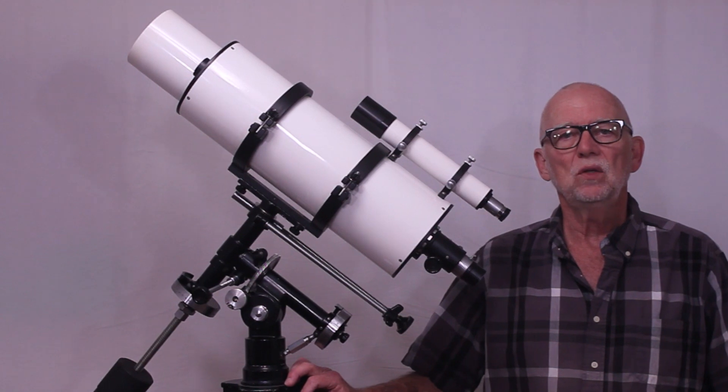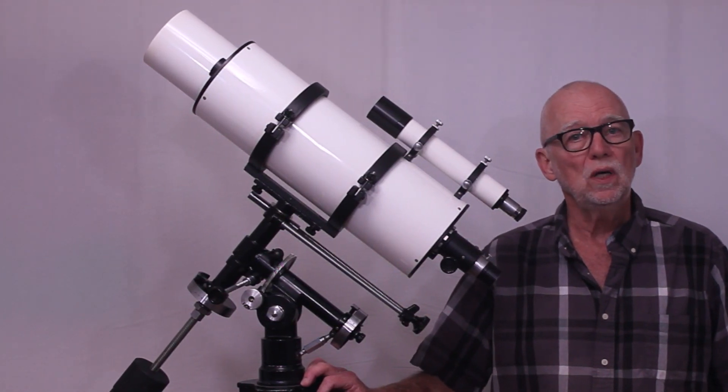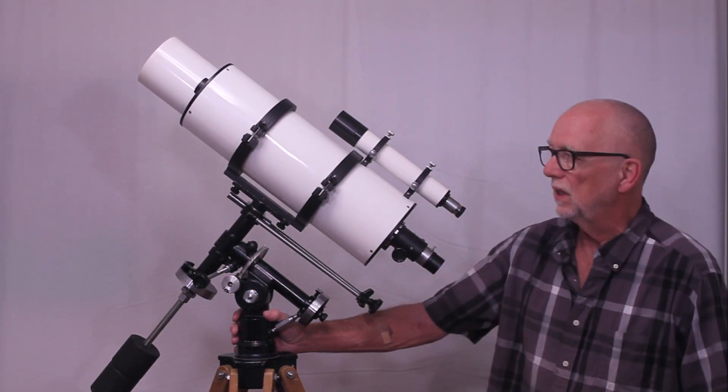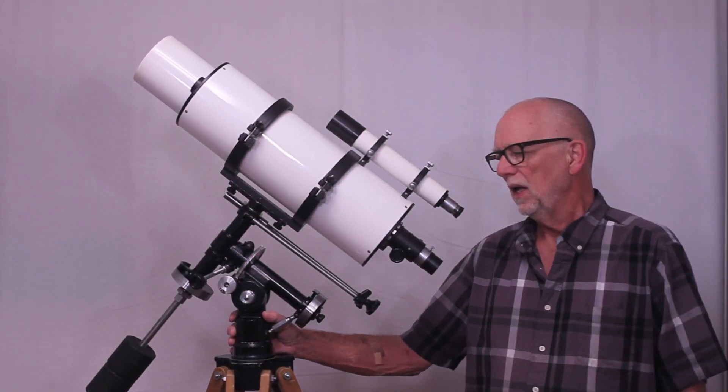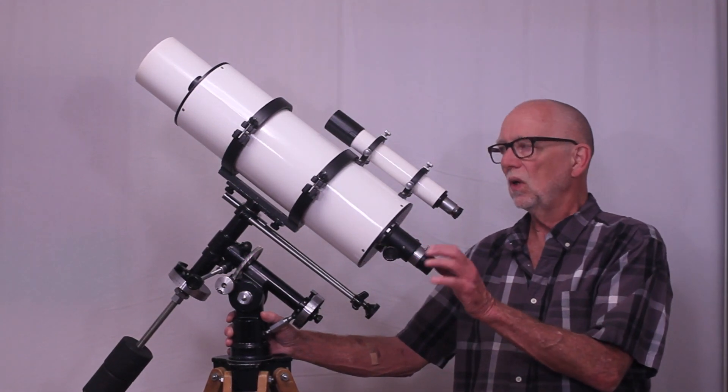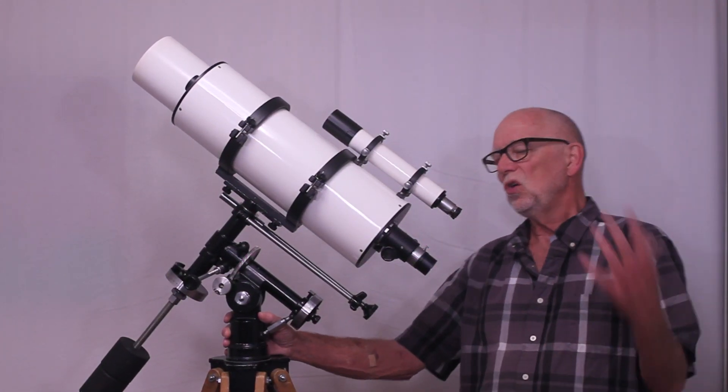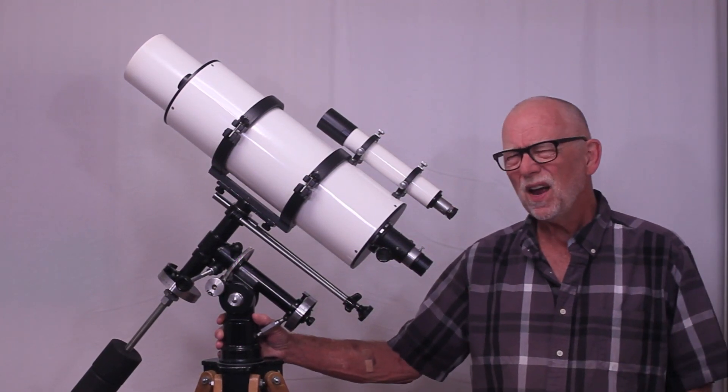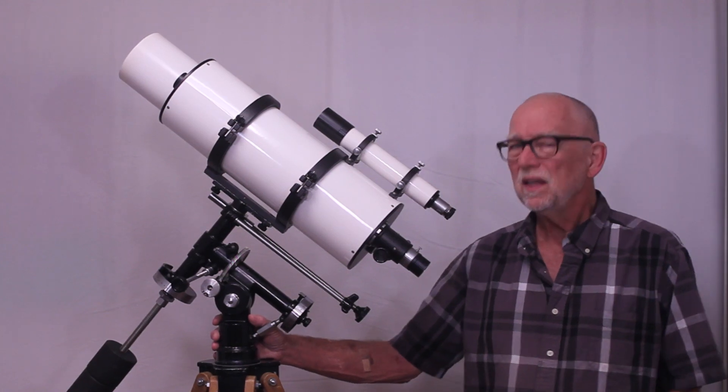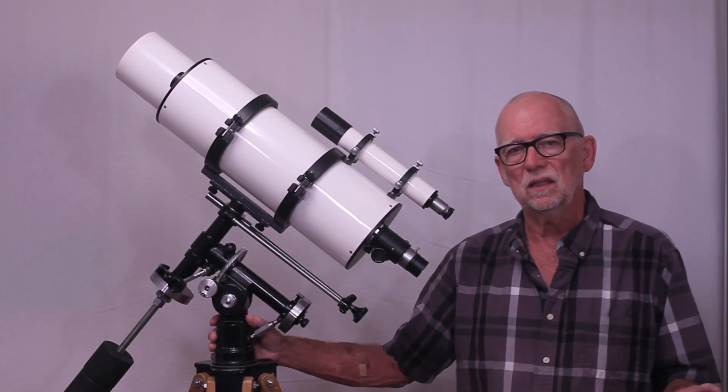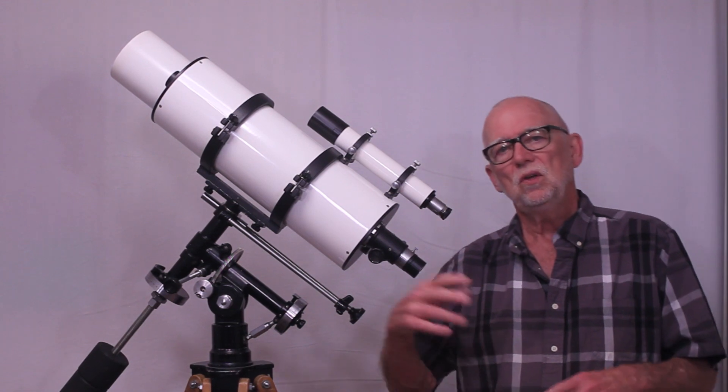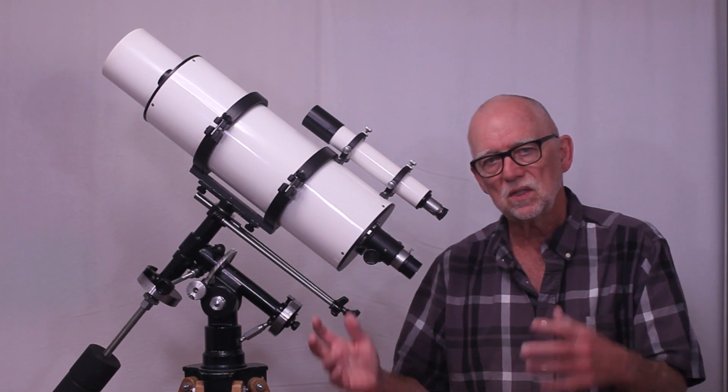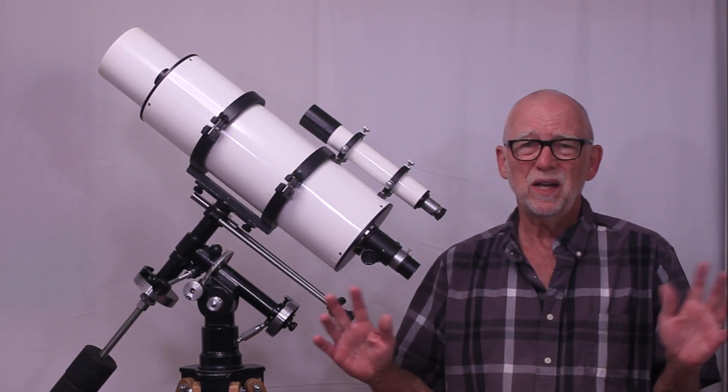In the United States this would be a Unitron 132C. This particular telescope was sold in Italy so the designation is slightly different. As a matter of fact I'll show you a close-up of the focuser. It says Unitron Polarex. Both names are on this telescope. Very, very rare, very unusual. I think that may have only happened in Italy. And there's some complication with Unitron and the naming rights for the products that were sold in the United States as Unitron. These were all made by Nihon Seiko.